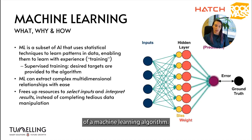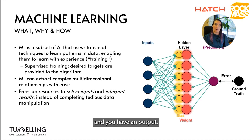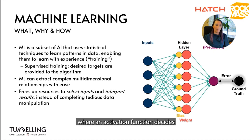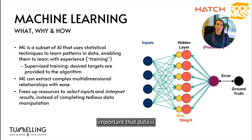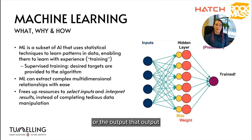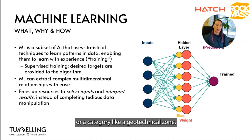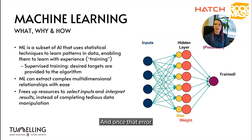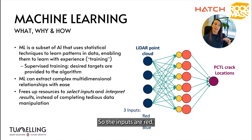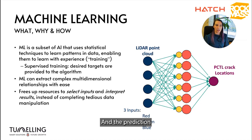Here is a simple schematic of a machine learning algorithm. You have the inputs, one hidden layer with a weight and a bias, and you have an output. The data in the input gets fired through the hidden layer where an activation function decides how important that data is, then it's used to make a prediction. That output gets compared to the target — the ground truth. In our example it's binary: crack or no crack. Once the error is calculated, it gets back-propagated to update those weights and biases until the error meets a minimum threshold and the algorithm is trained. In our case, the inputs are the red, green, and blue channels plus the XYZ coordinates from the LiDAR point cloud captured using the RockMass EON, and the prediction is crack or no crack on the PCTL.